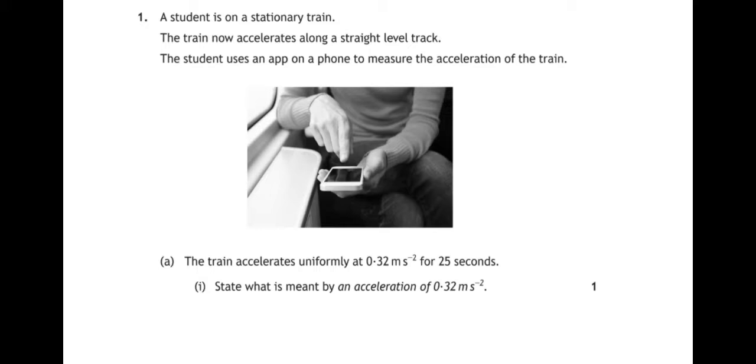Part A, the train accelerates uniformly at 0.32 meters per second per second for 25 seconds. State what is meant by an acceleration of 0.32 meters per second per second.